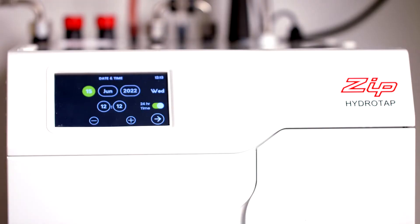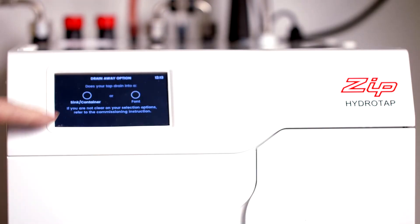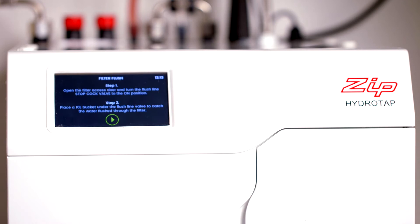This simply means if your tap or faucet is installed to dispense into a sink or the specially designed Zip font. If you select sink container the flushing process from the tap will be automatic. If you select font you'll need to use the tap or faucet to dispense water during the commissioning process.